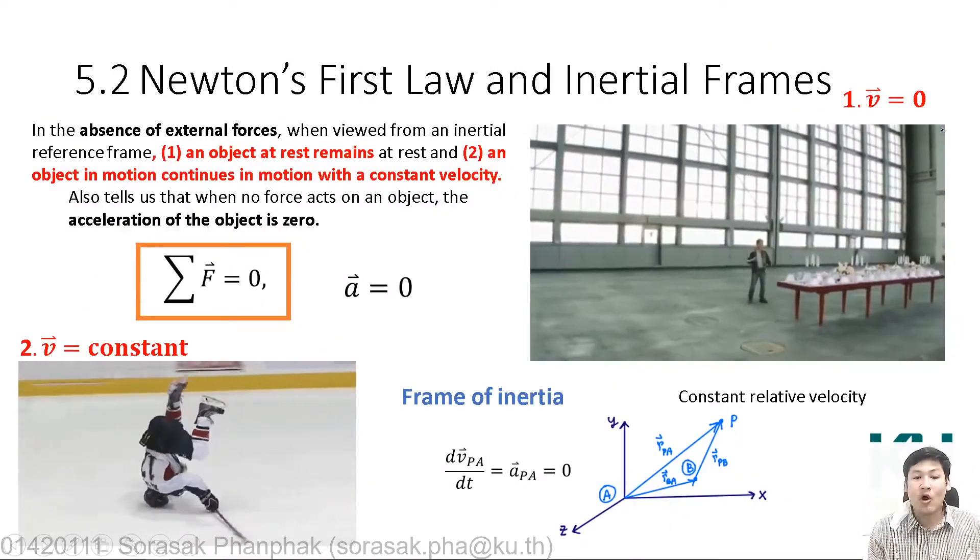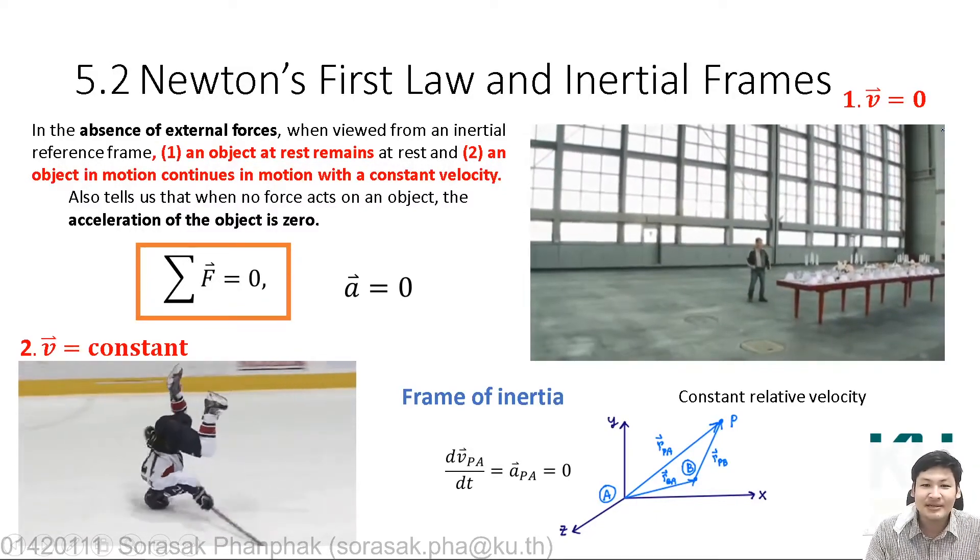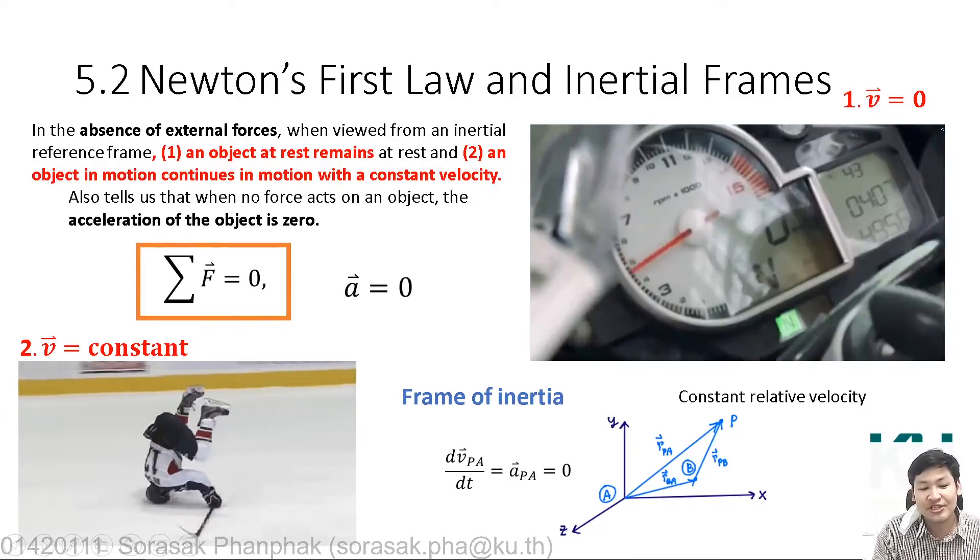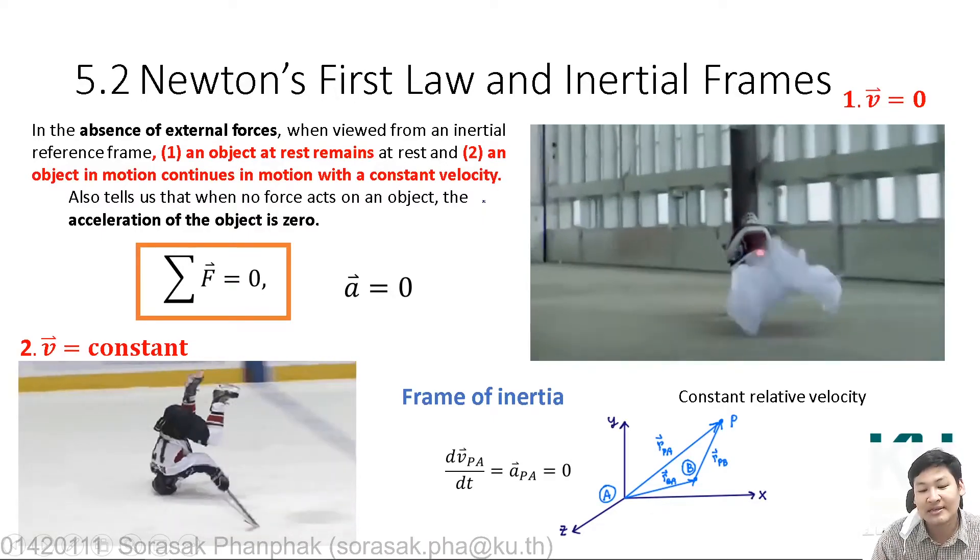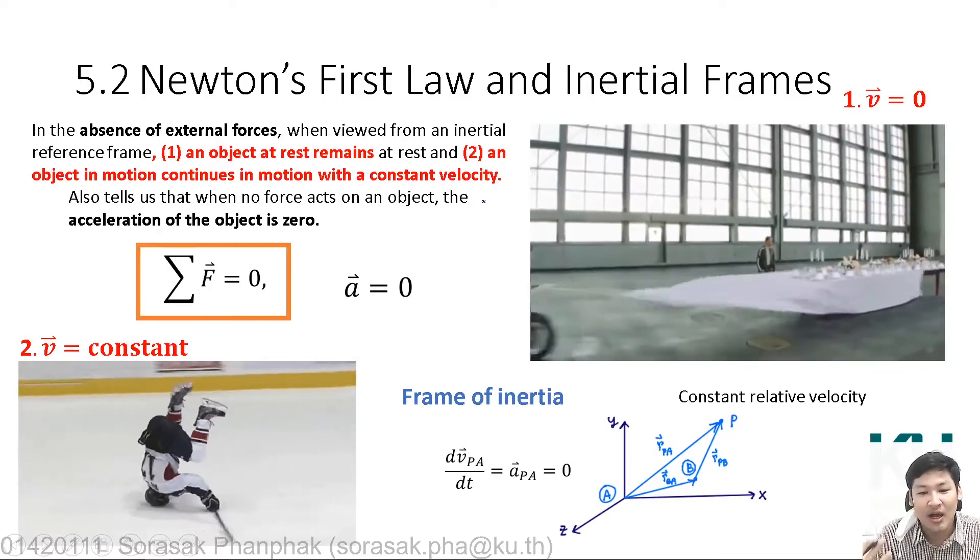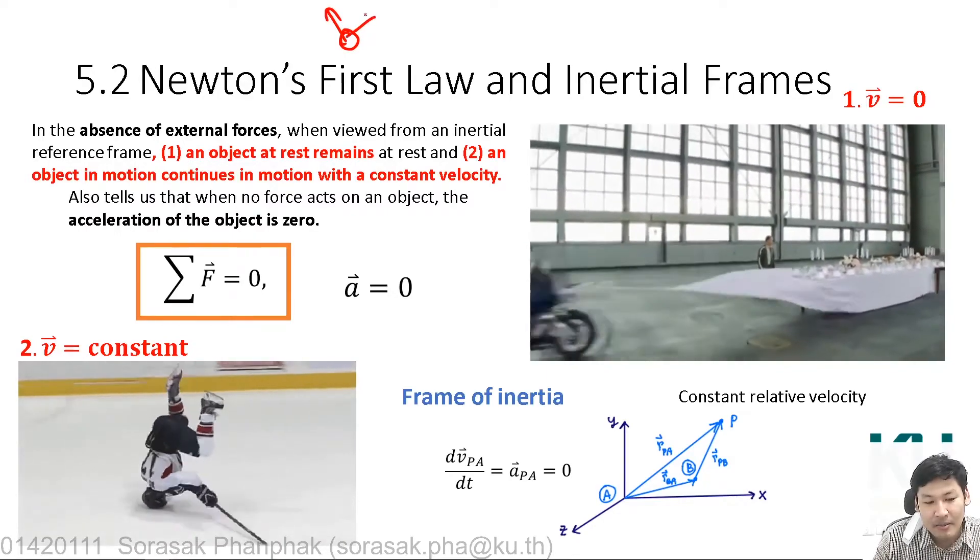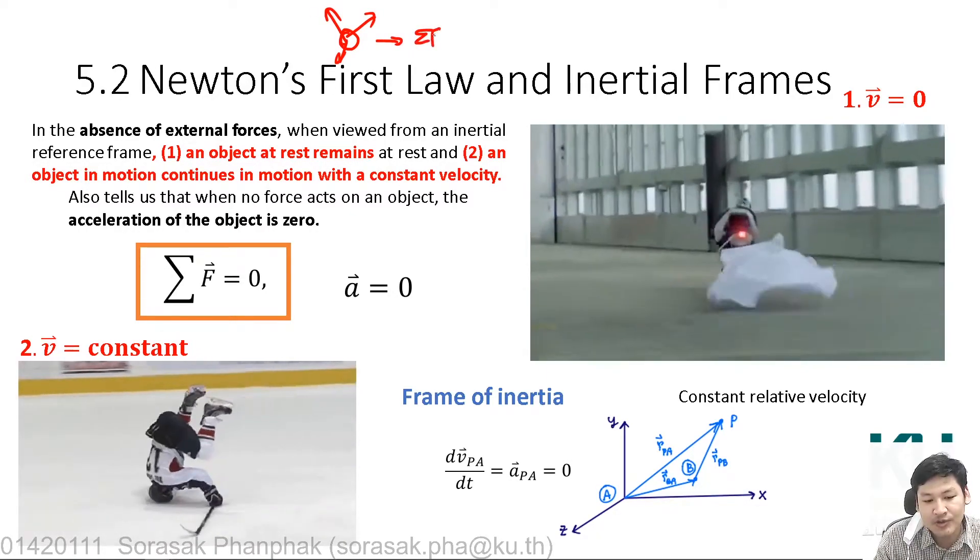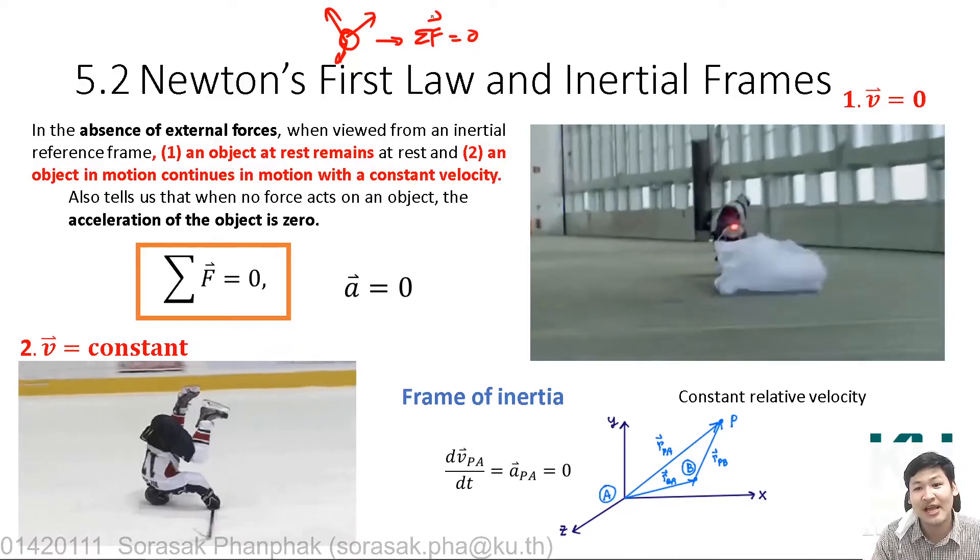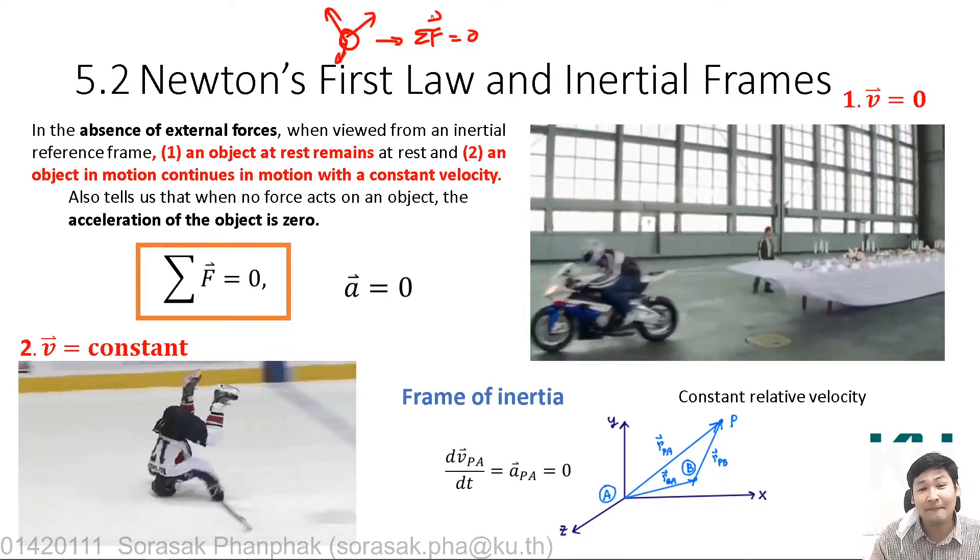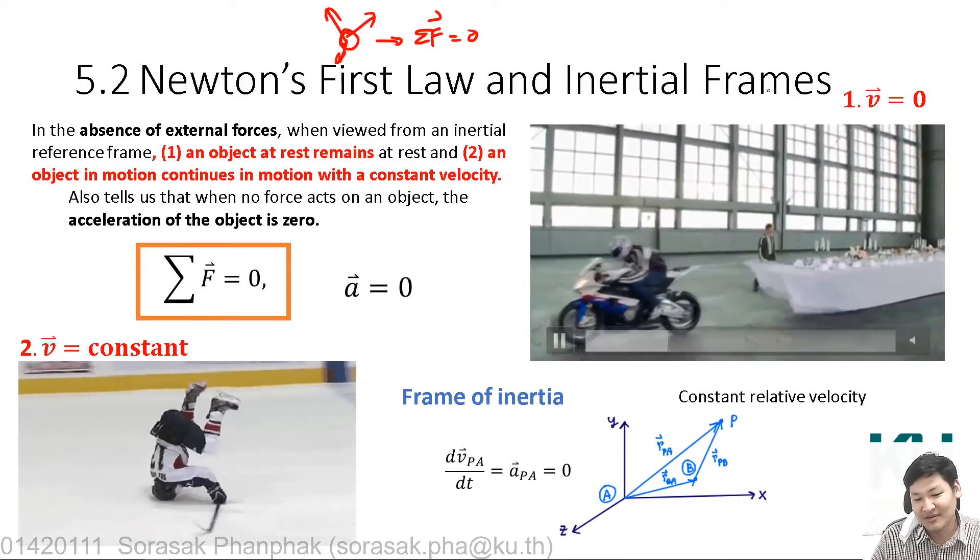Since you know how to sum up all forces and check components, Newton's laws can be applied. There are three main laws of Newton. The first one is called the law of inertia. The law of inertia happens when you have an absence of force or resultant force. That means all the forces pulling that object, when summed up, equal zero. In this case, the system has no resultant force acting on the object. This can happen in two cases.